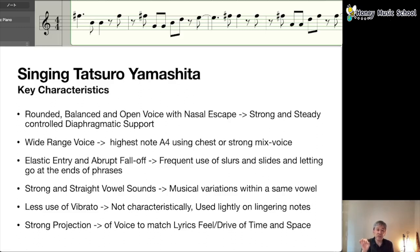In the way he sings this song, he has a very elastic style entry, and then he also uses some abrupt fall-offs. He frequently uses slurs and slides, which we'll get into later. And there are some areas that he lets go at the end of the phrase. He obviously has strong and straight vowels. This goes hand-in-hand with the first point, the rounded, balanced, and open voice, because you need a very strong and straight vowel sound in order to have that type of voice.